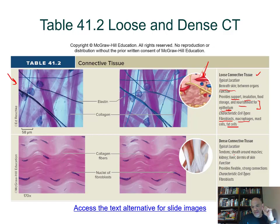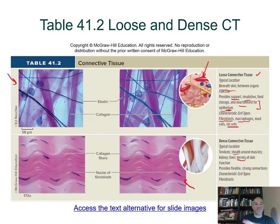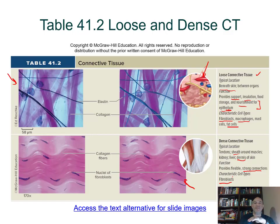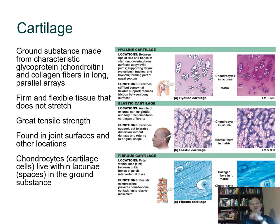Dense connective tissue — found as the sheath around muscles, capsules of the kidney and liver, and as the dermis — provides strong support and connection. There's less space for other cell types here, primarily fibroblasts. Adipose tissue is a kind of loose connective tissue. Dense irregular connective tissue forms the dermis of skin.